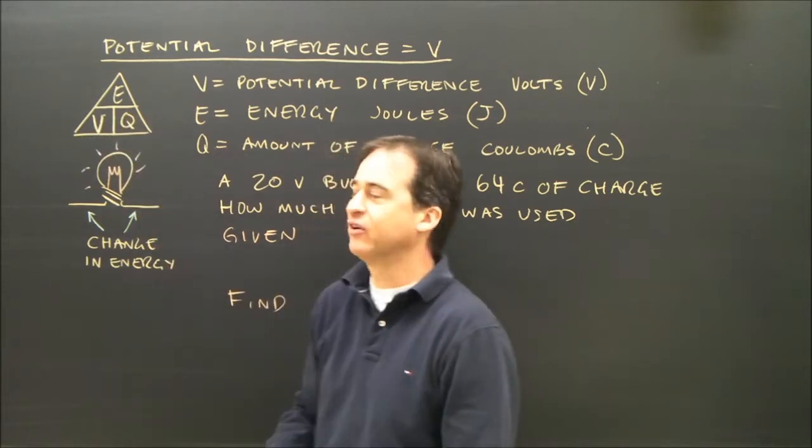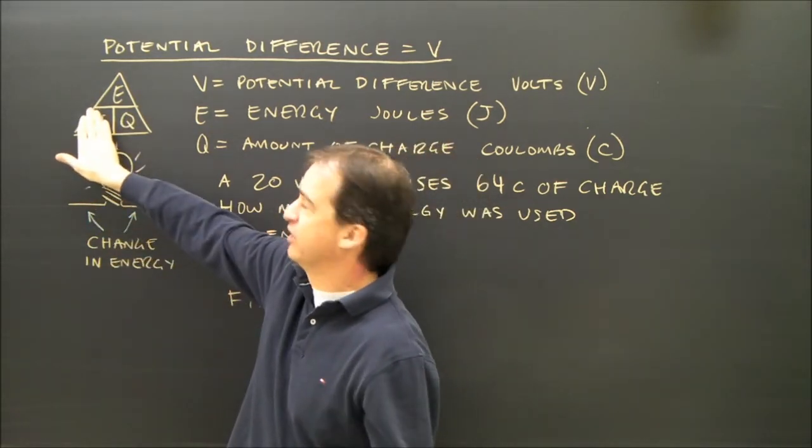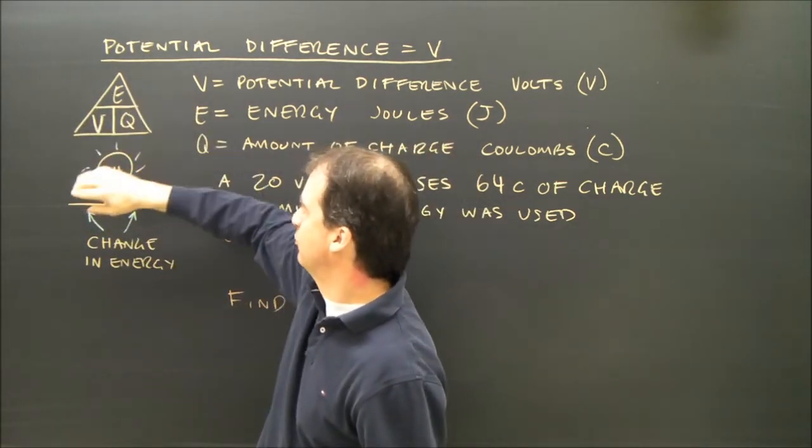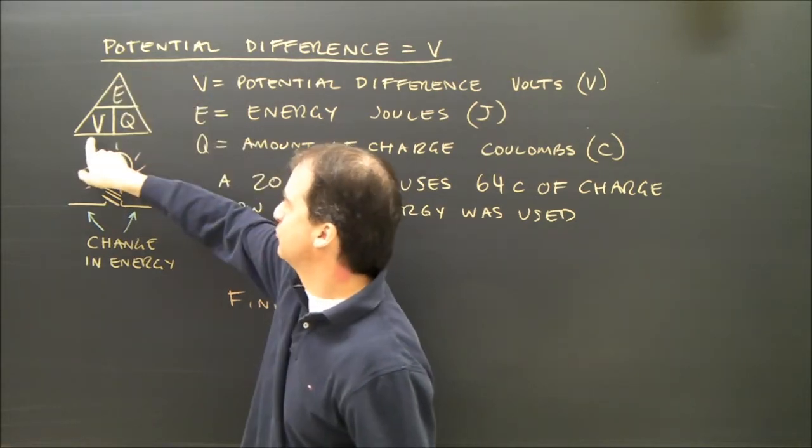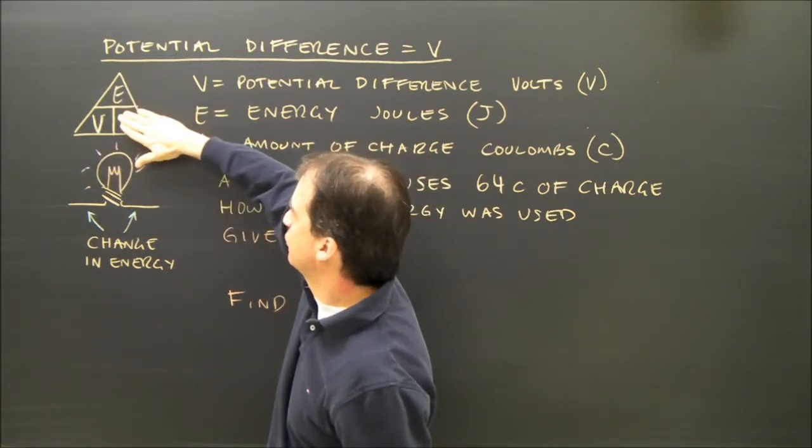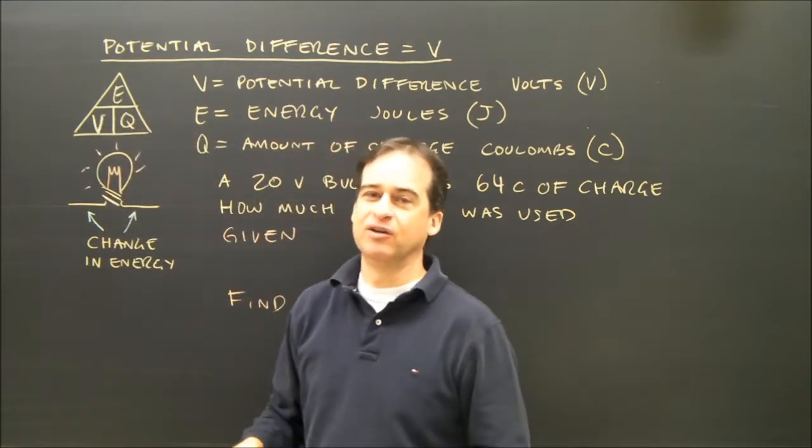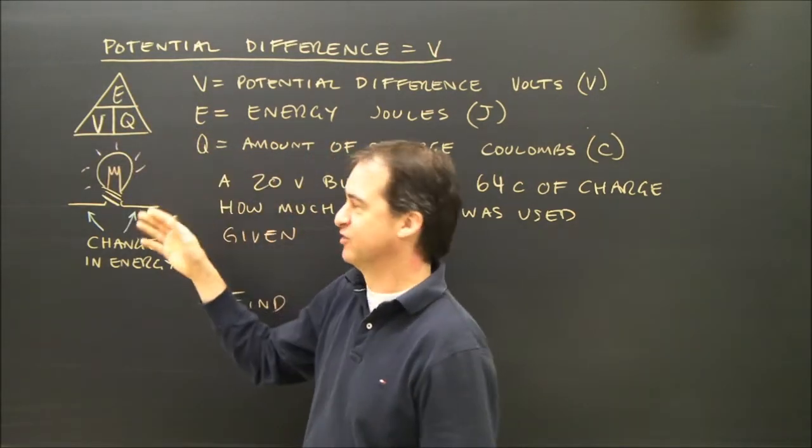Potential difference is energy divided by charge. We use this triangle here, so voltage or potential difference is E divided by Q. The energy is equal to voltage times charge, and the charge is equal to energy divided by voltage or potential difference.